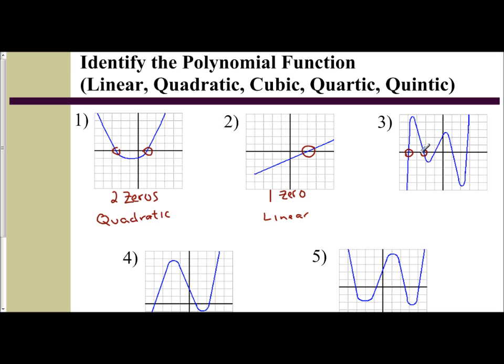And the more complicated the shape gets, that's why it's important you connect the number of zeros to the type of function. So I see three, four, five zeros, and so I need to make the connection that five zeros represents a quintic function.